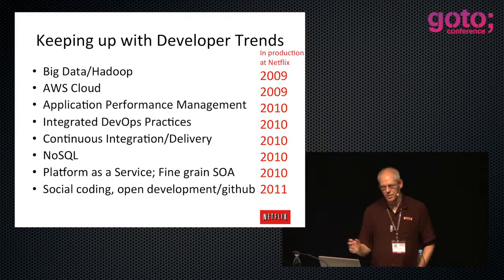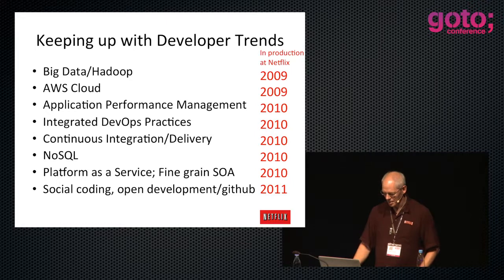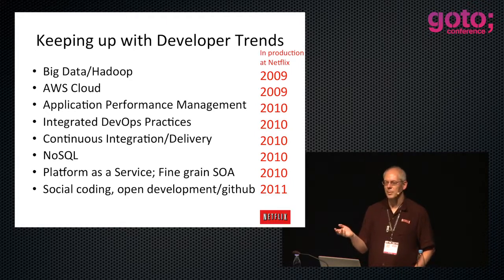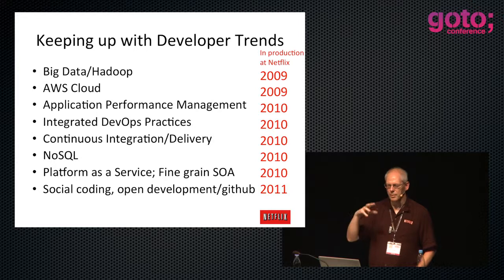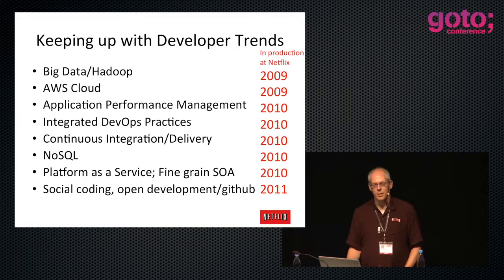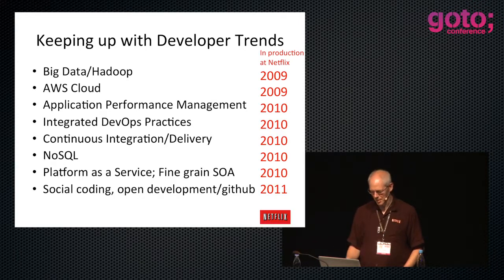There's a whole bunch of developer trends or management buzzwords. How many people are doing big data Hadoop in production? How about Amazon Cloud in production? APM - application performance management? Things like AppDynamics, Dynatrace. Integrated DevOps, getting your dev and ops together. Continuous integration delivery - that was most of the conference tracks, people learning how to do it.